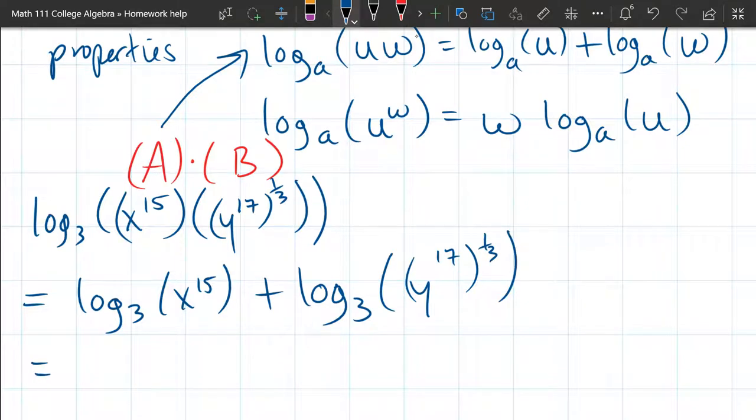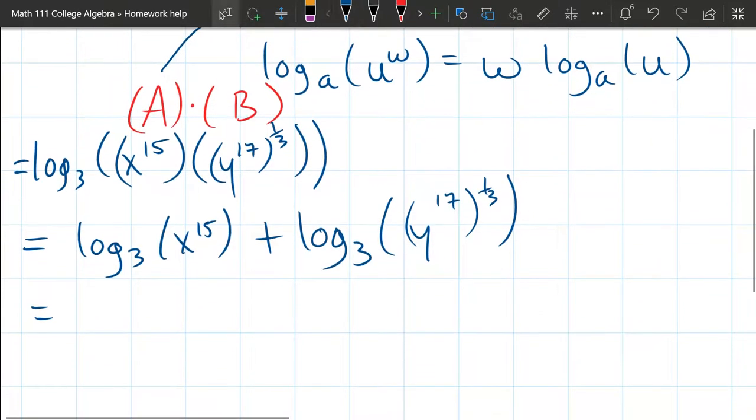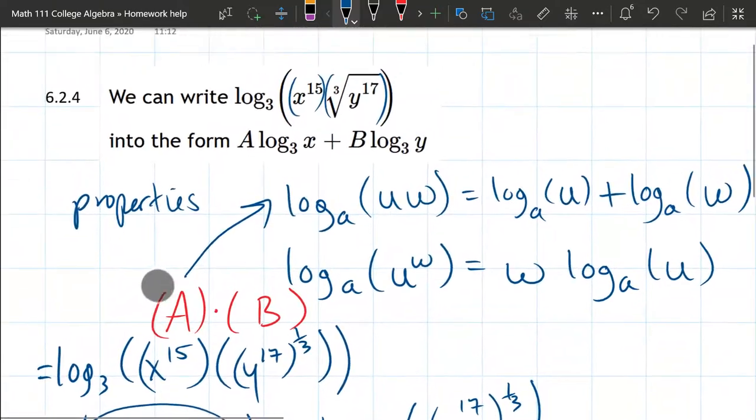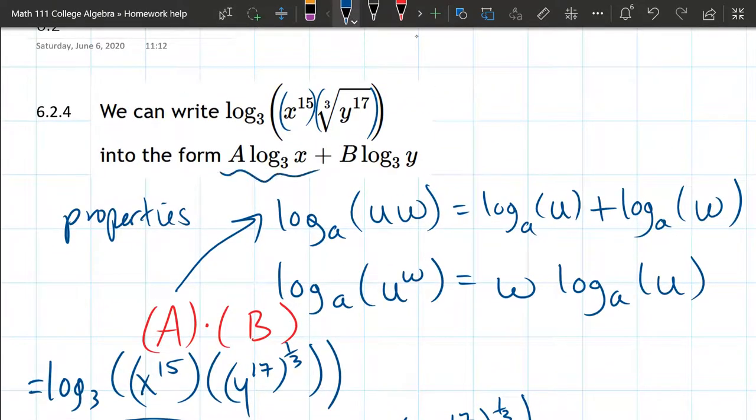All right, so we turn the product inside into a sum outside. Now we can apply that second rule, which is now at the top of the screen. And I could bring the power out front. So we have 15 log 3 of X. And let's look back at our question. They're trying to get us to write it in this form here. And so you can already tell that A is 15. We're going to look at the second part now.